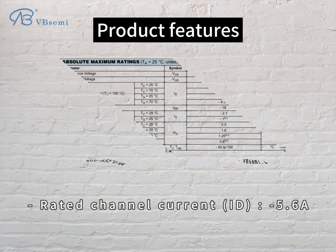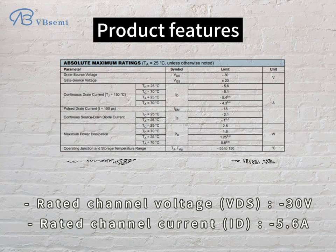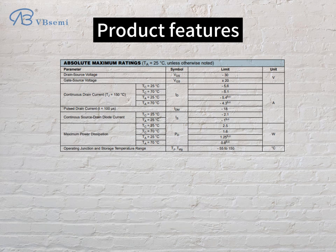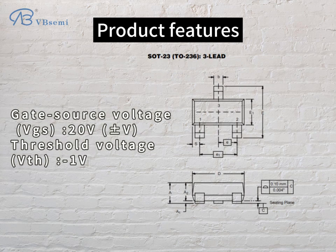Product features: rated channel voltage VDS is -30V; rated channel current ID is 5.6A; gate-source voltage VGS is 20V; threshold voltage VTH is -1V.